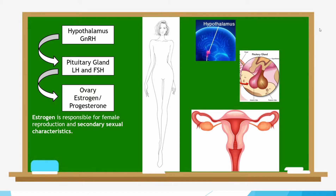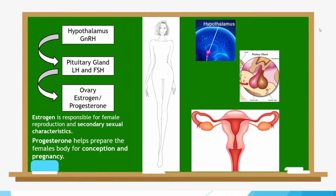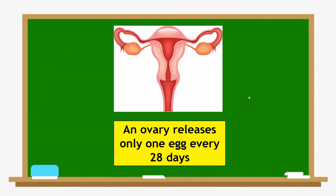Estrogen also controls the menstrual cycle and is important in childbearing. Progesterone helps prepare the female's body for conception and pregnancy. Progesterone triggers the lining of the uterus to thicken to accept a fertilized egg and regulates the monthly menstrual cycle.